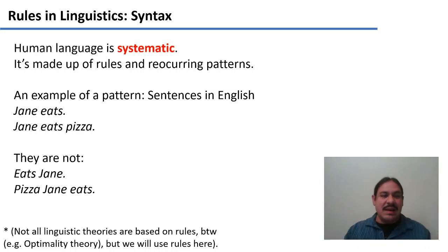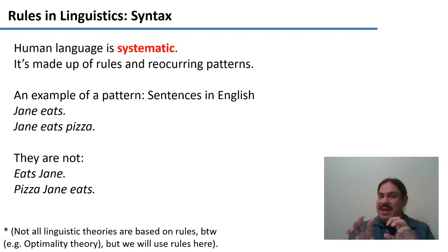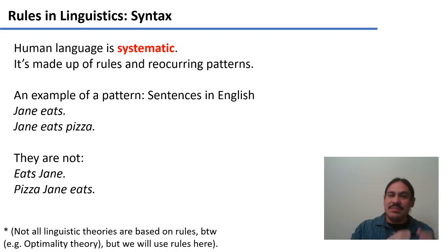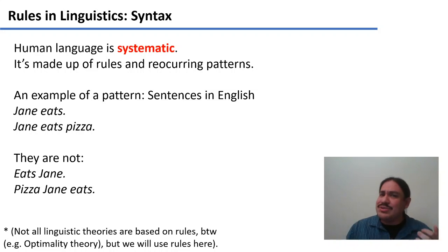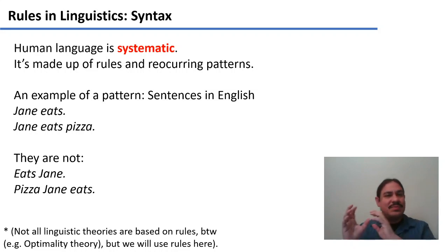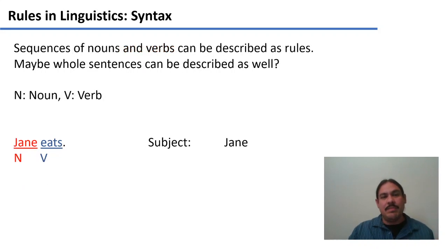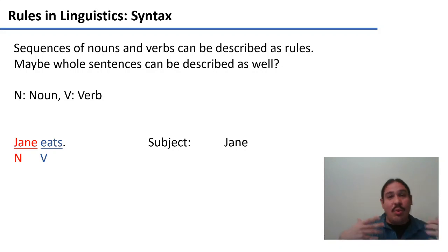We cannot scramble them. For example, 'eats Jane' is not a good sentence of English — that's verb noun. Something like 'pizza Jane eats' is not a good sentence of English either — that would be direct object, subject, verb. Other languages can say this but English really cannot. So the pattern subject verb direct object is one that reoccurs time and again. We could take that pattern and all similar patterns and turn them into rules, so that ultimately you could have a massive description of how English works.